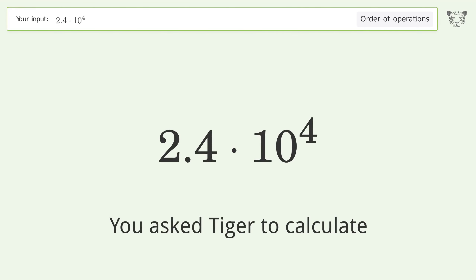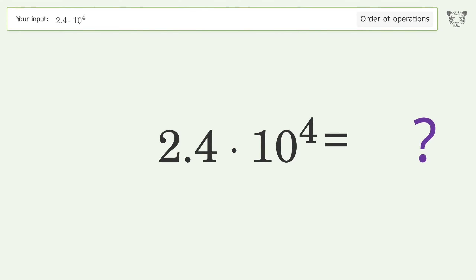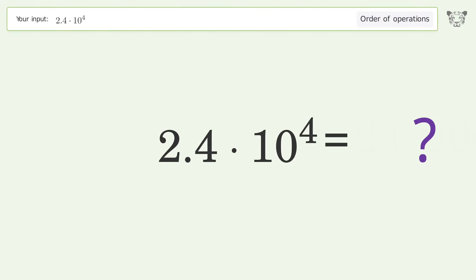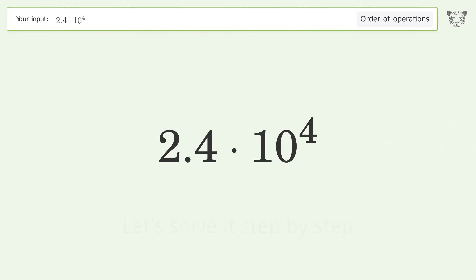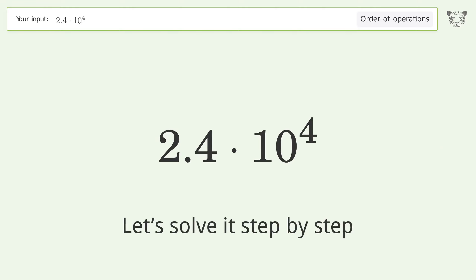You asked Tiger to calculate this. It deals with the order of operations. The final result is 24,000. Let's solve it step by step.